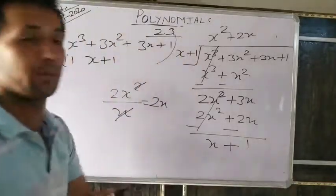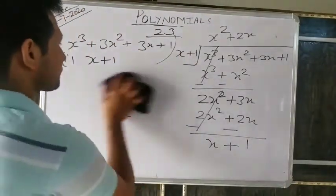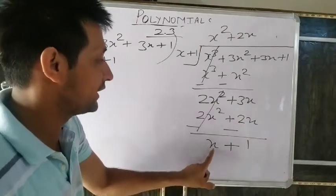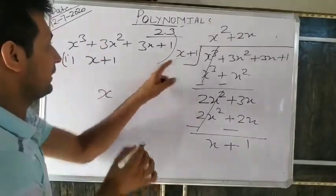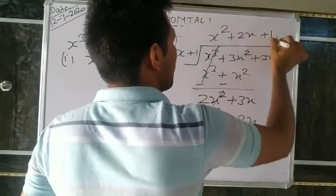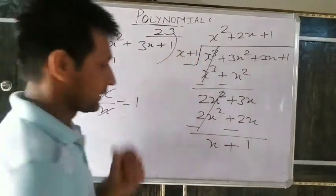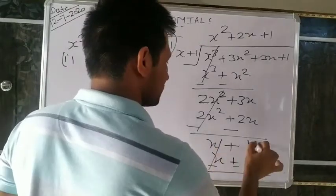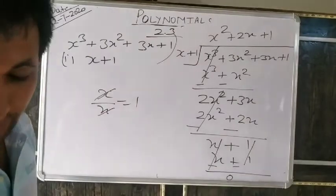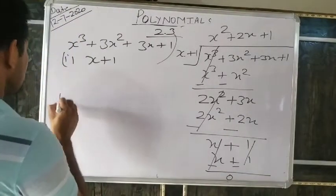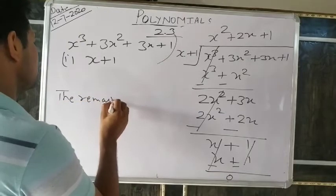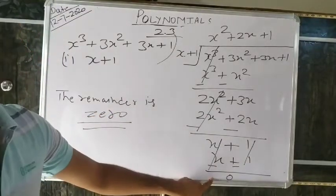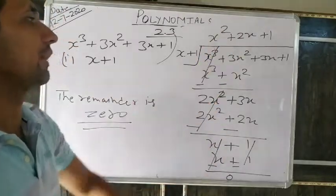Multiply 1 by (x+1): gives x+1. Change sign — negative, negative. So x minus x equals zero, and 1 minus 1 equals zero. The remainder is zero. So when x³+3x²+3x+1 is divided by x+1, the remainder is zero. Understand? The remainder is zero.